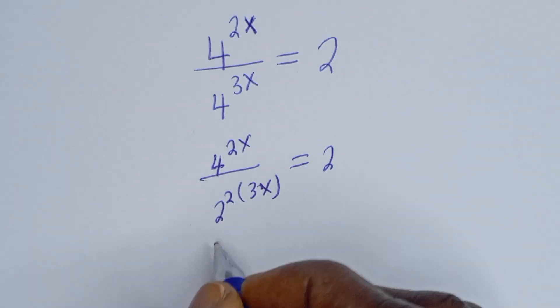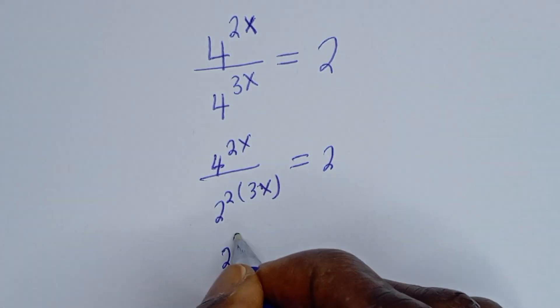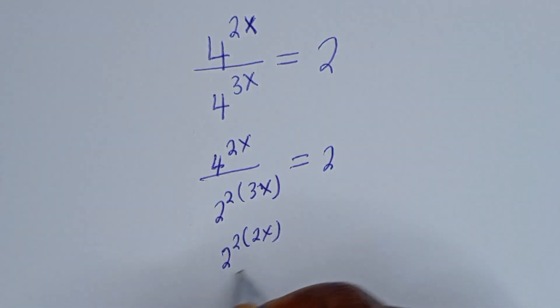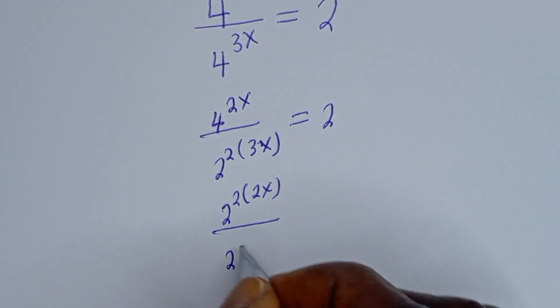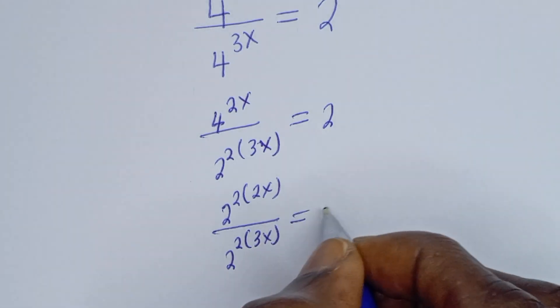The numerator can also be expressed in this form. We have 2 square brackets 2x divided by 2 square brackets 3s is equal to 2.